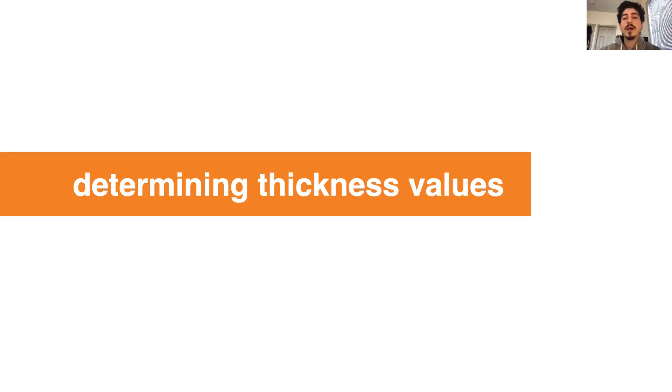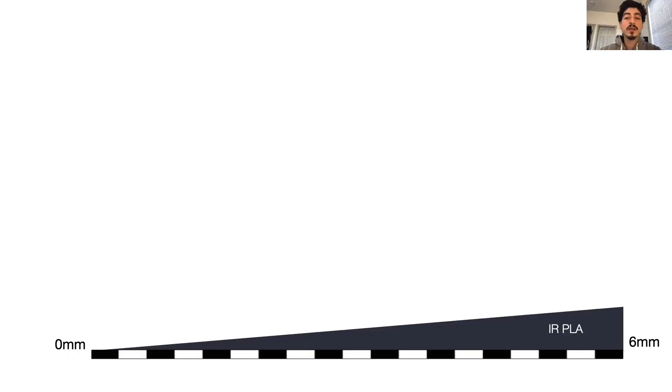Now you might be wondering what value should be used for the shell thickness and code thickness that I mentioned. To determine the shell thickness, we printed a sample pattern, a checkerboard. And on top of it, we printed the infrared translucent PLA of varying thickness. Then we took a picture of it from above.